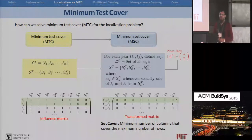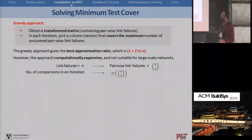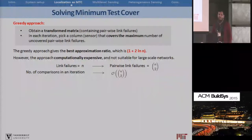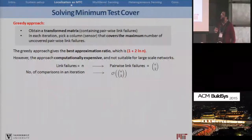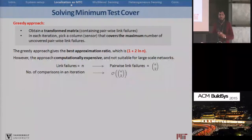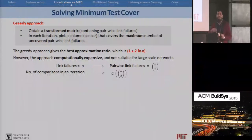There are many efficient heuristics to solve this set cover problem. One greedy approach is to obtain the transform matrix and then solve the set cover by selecting in each iteration the column that covers the maximum number of uncovered pairwise events. It has been shown that this greedy approach achieves the best approximation ratio. However, the problem is that this approach is computationally expensive — in each iteration, the number of elements to compare is of order n-choose-2, since if we have n link failures the number of pairwise link failures is n-choose-2. This is not very good for large-scale networks.